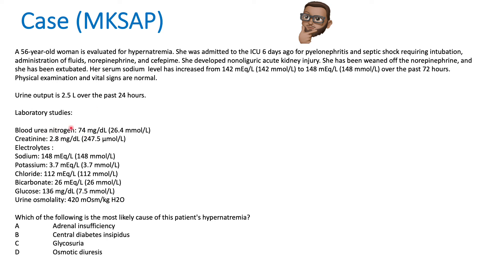Labs show AKI with elevated BUN and creatinine. Other labs are largely unremarkable apart from the hypernatremia. Urine osmolality is 420, which you'd expect to be higher with a normal kidney response to hypernatremia — suggesting the kidney is not fully concentrating urine appropriately.